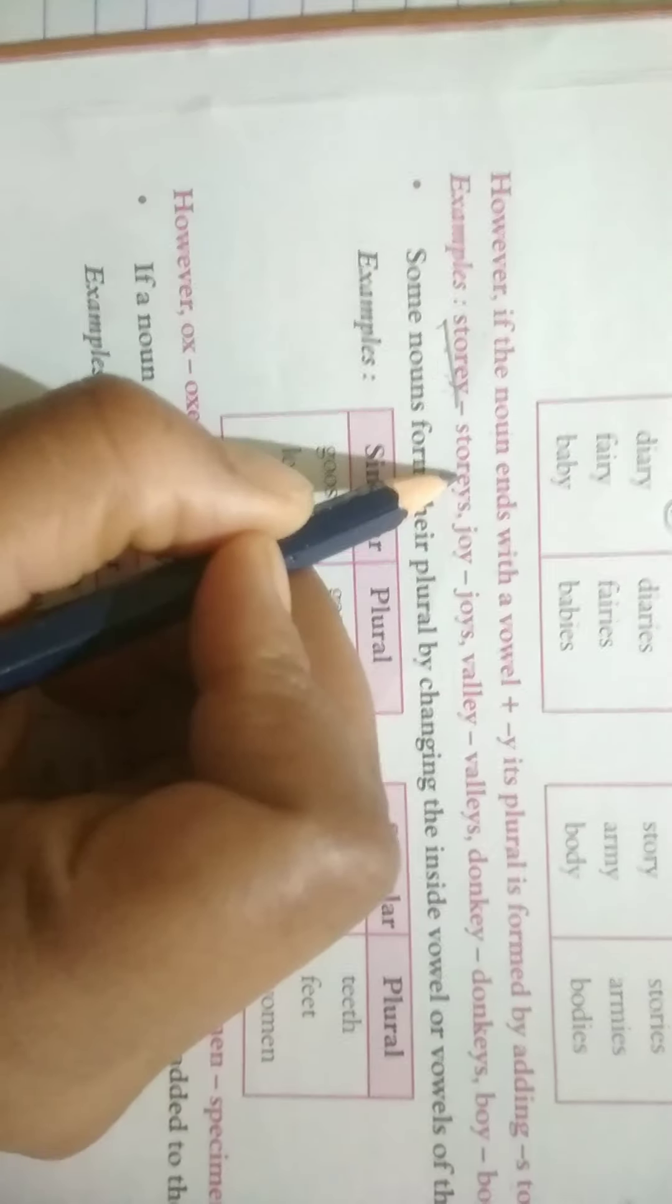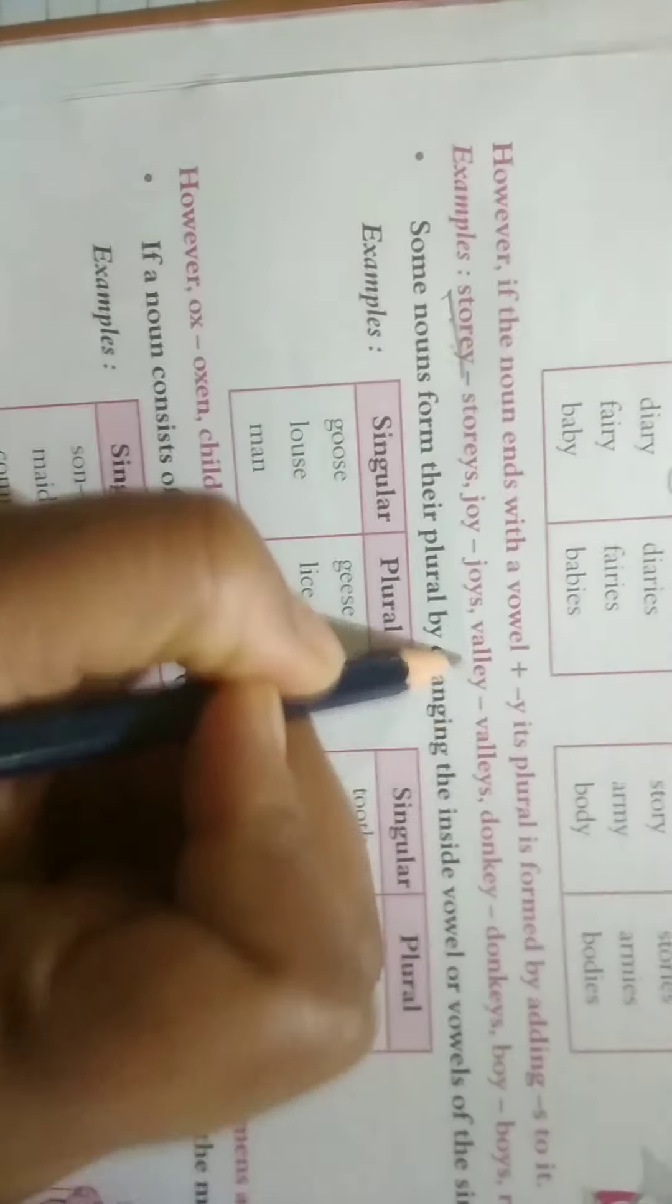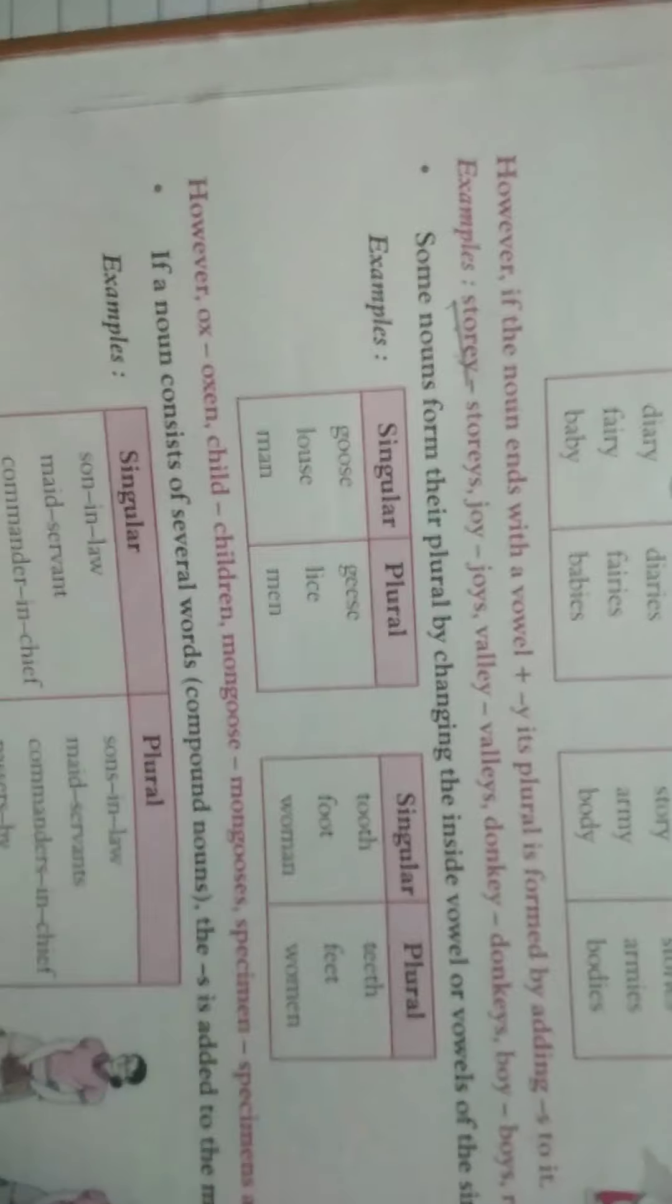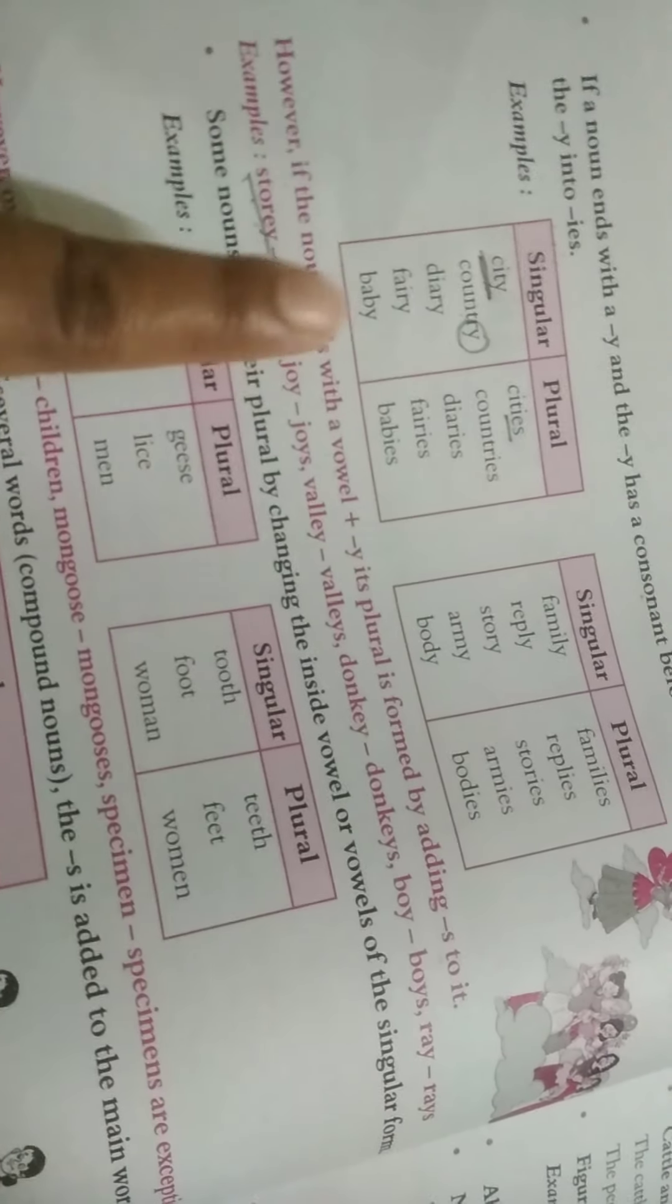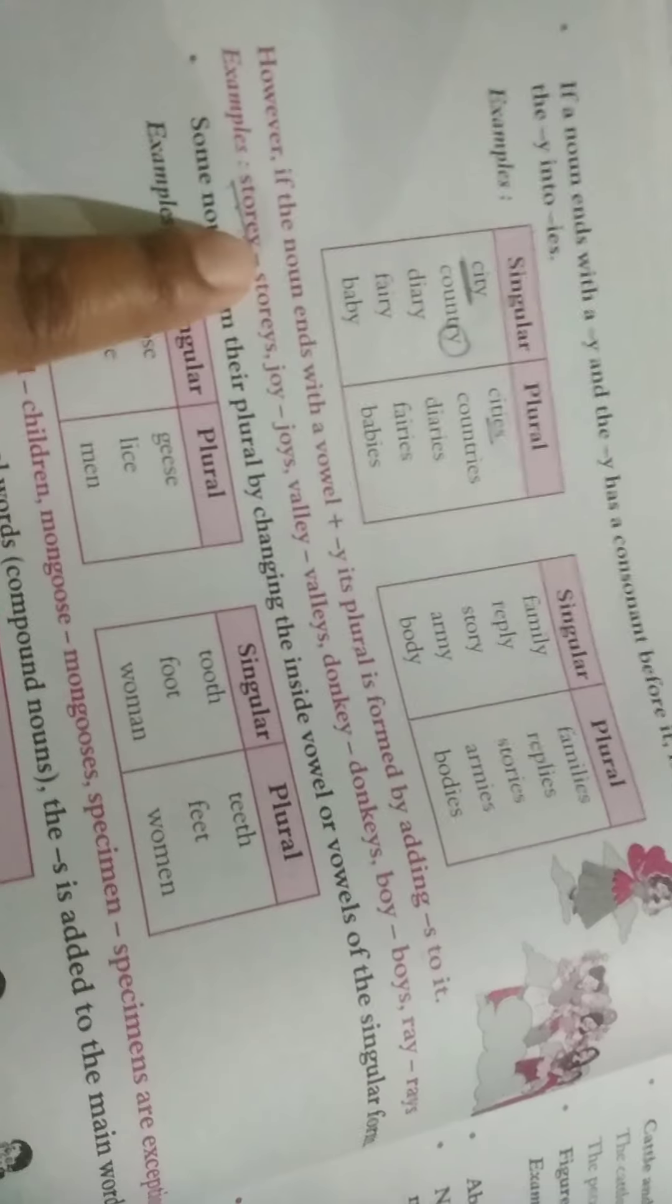It will be made by adding S at the end of the consonant. So, story will become stories. Joy. Joys. Valley. Valleys. Read it? And, another thing about these examples are, that all these words are of which sound? It is of vowel sounds.